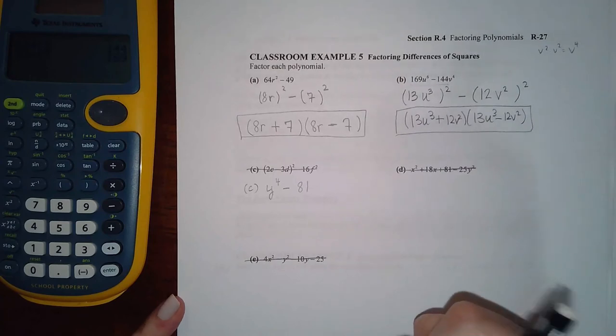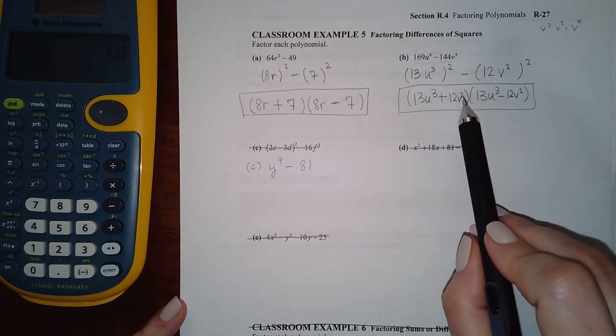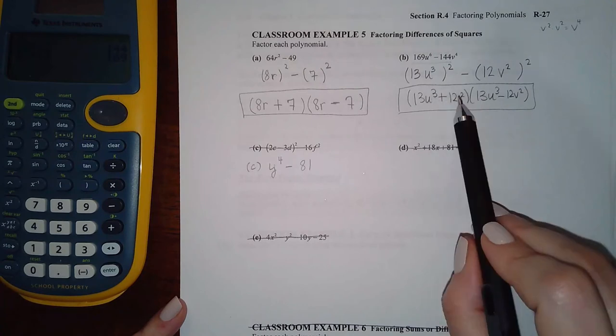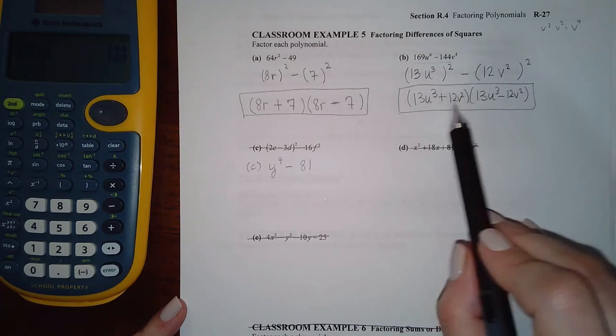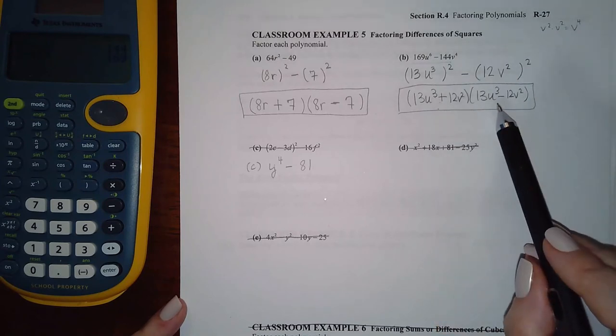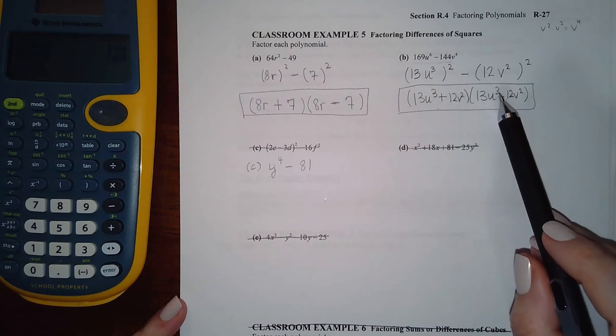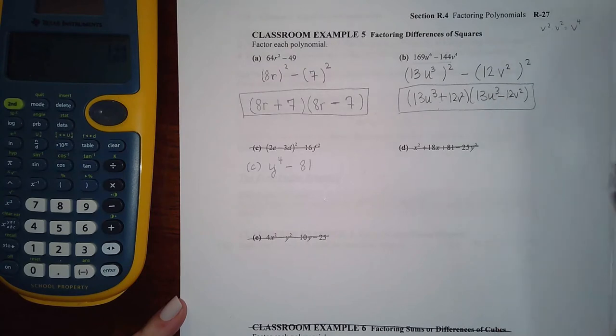Now notice that even though this has cubes and squares, they both have to have squares and a minus sign. So this is obviously not going to factor further. Here though, I do have a minus and a square, but this doesn't have a square, so you can't do the difference of squares again.